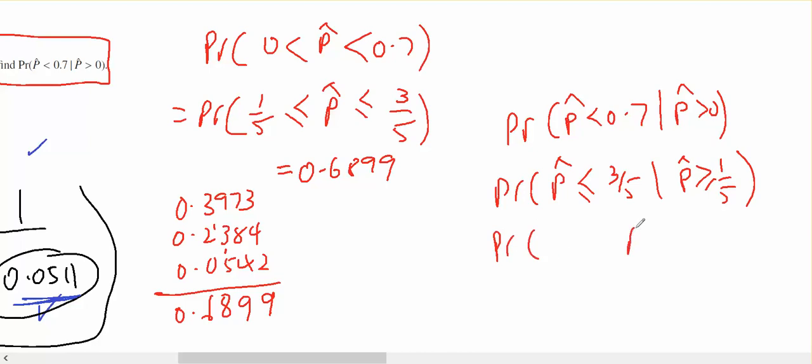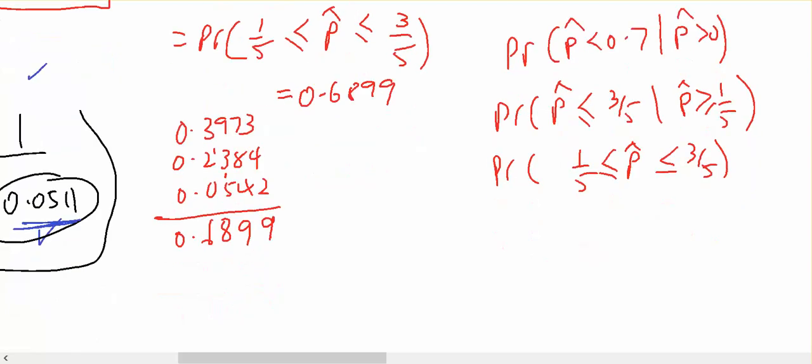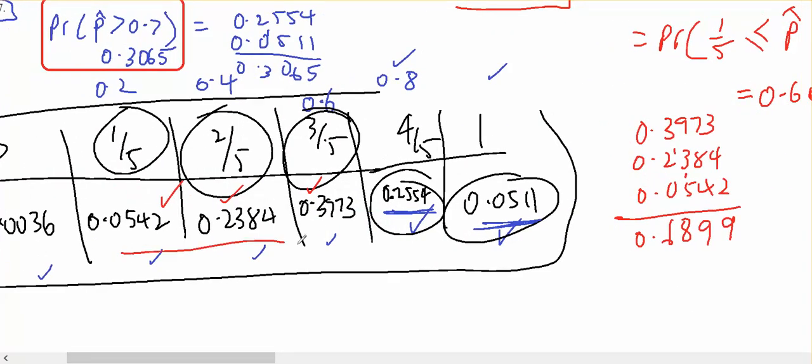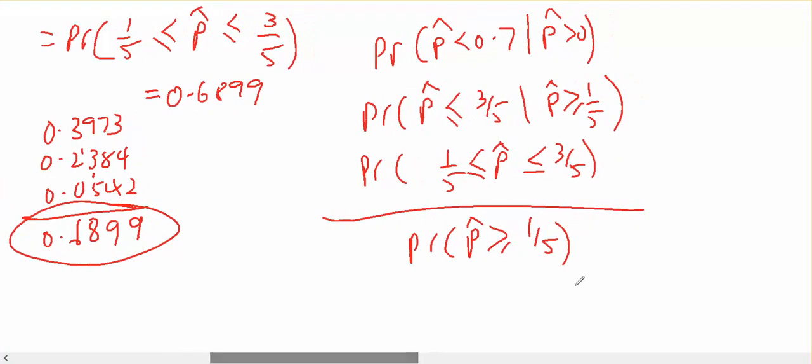So it's the probability that P hat goes from 1/5 to 3/5 over the probability that P hat is greater than or equal to 1/5. 1/5 to 3/5 are those three numbers which is this value. That's why it's a hints question.